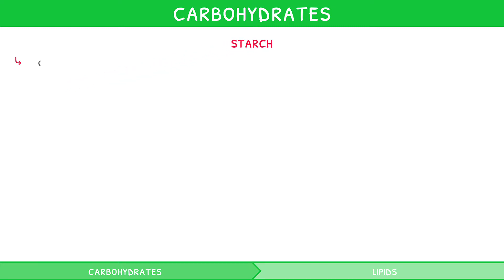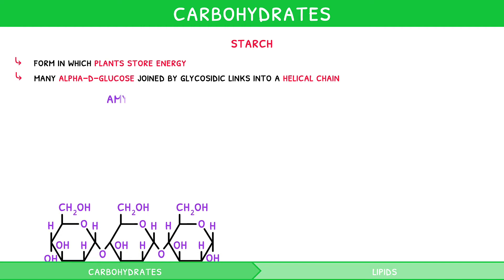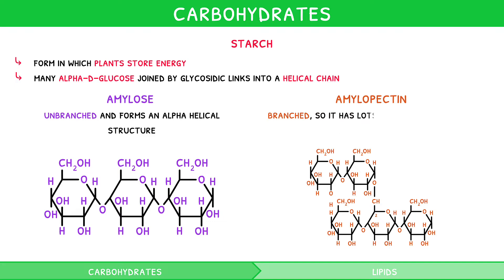Starch is the form in which plants store their energy. It is composed of many alpha-D glucose molecules joined by glycosidic links into a helical chain. It is found in two different forms, amylose and amylopectin. Amylose is unbranched and forms an alpha helical structure. Amylopectin is branched, so it has lots of free ends for easy hydrolysis.